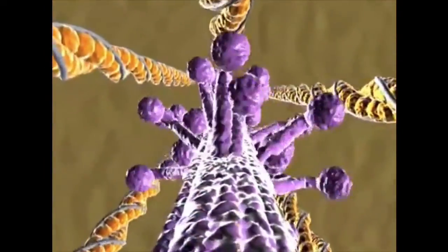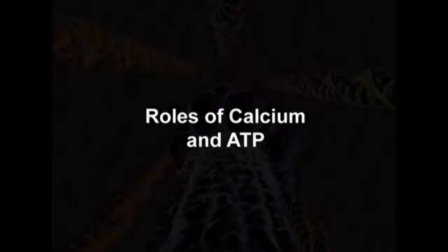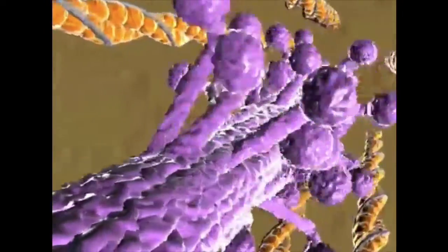The myosin filaments have heads that bind and pull actin repeatedly, shortening the sarcomere. How do the myosin heads pull actin?